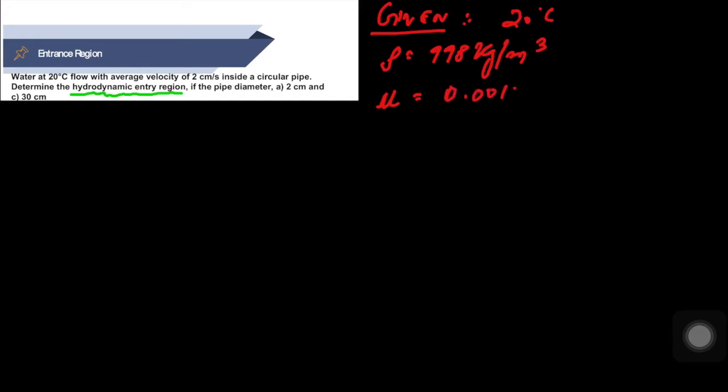The hydrodynamic entrance or entry region LH is required for part A and part C. Part A is when the pipe diameter is 2 centimeter.